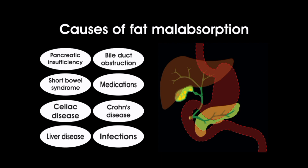Celiac disease: this autoimmune disorder causes damage to the lining of the small intestine, which can lead to malabsorption of nutrients, including fats. Crohn's disease: this inflammatory bowel disease can cause damage to the lining of the intestines, which can interfere with the absorption of nutrients. Short bowel syndrome: this condition occurs when a significant portion of the small intestine is removed or is not functioning properly, which can interfere with nutrient absorption. Medications: certain medications can interfere with the absorption of fats, such as Orlistat, a weight-loss medication,